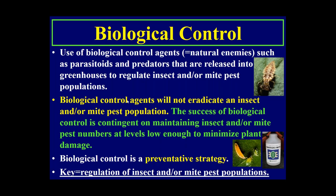Biological control is the use of natural enemies such as parasitoids and predators released into greenhouses to regulate insect or mite pest populations — and the key term is regulation. Biological control agents will not eradicate a pest population; success depends on maintaining pest numbers low enough to minimize plant damage, since natural enemies need a certain level of pests to sustain their populations. It is also a preventative strategy — when you see aphids, thrips, mites, or whiteflies on your plants, it's generally too late.